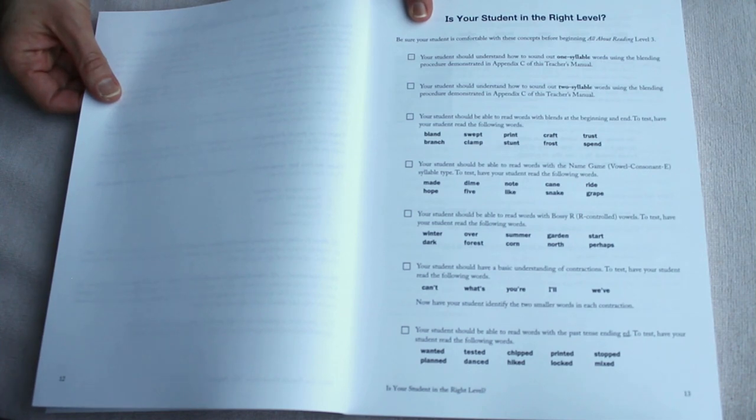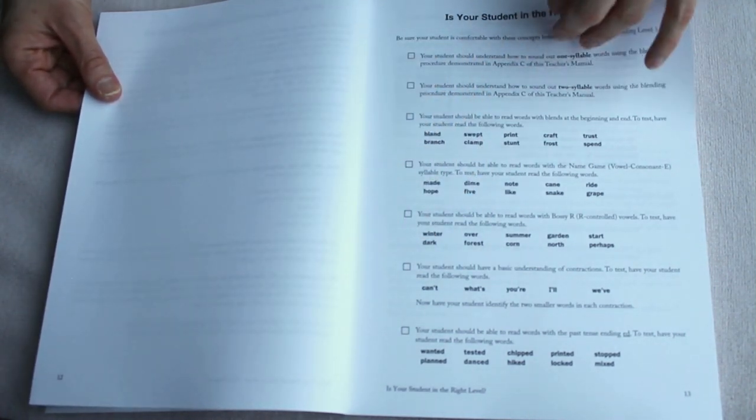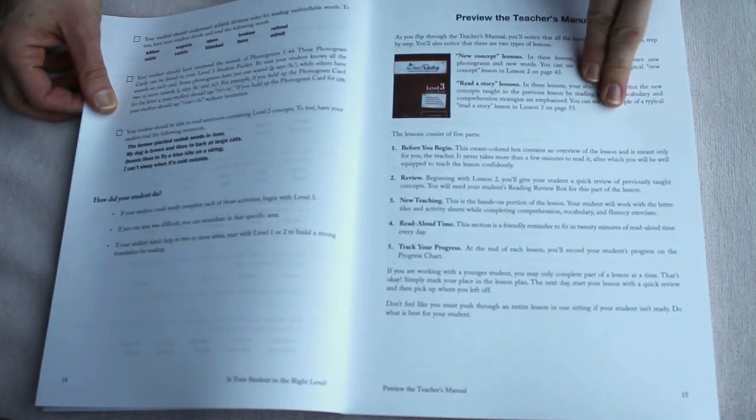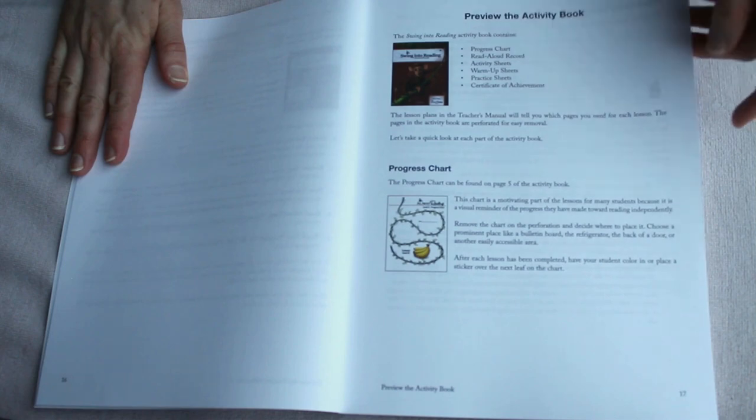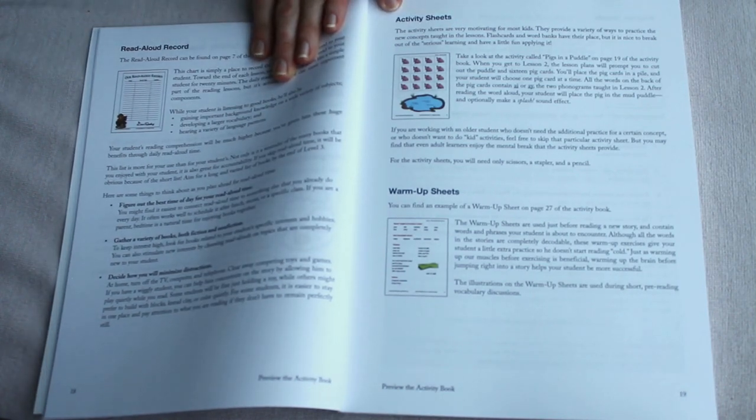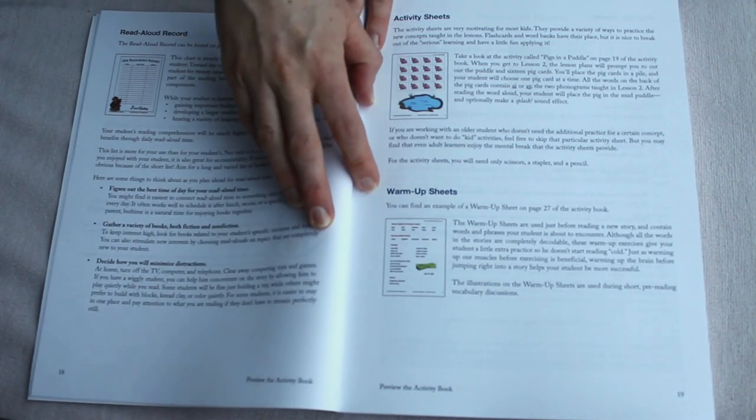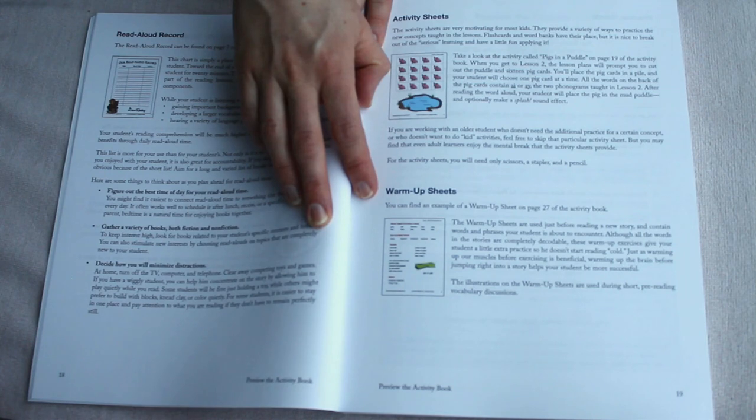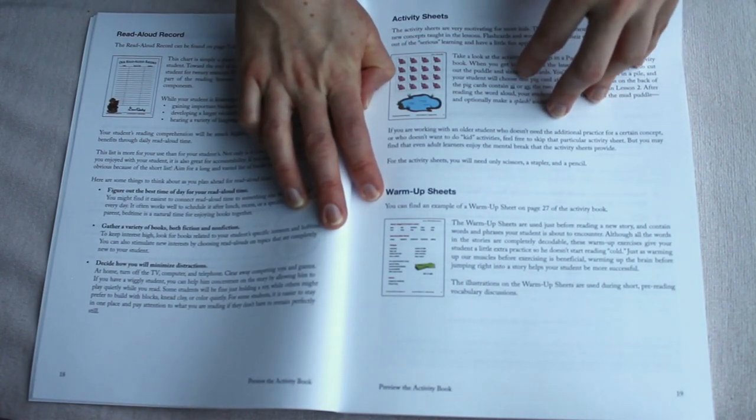If you're new to All About Reading, take a look at this page that asks, Is your student in the right level? Go through this. Make sure that all of these check marks, or at least most of them, fit your student. To make sure that you're not pushing them too hard. In the beginning, they also explain how to use the instructor manual, which I won't go over. This shows the elements of the program. There's the read-aloud record, which I have never used. There are activity sheets, which are little games that are part of the student activity manual. The warm-up sheets help the kids work on vocabulary for a specific story. And honestly, we quite often skip these, because my kids are picking up on reading fast enough. Some kids might need this and might find it more interesting.